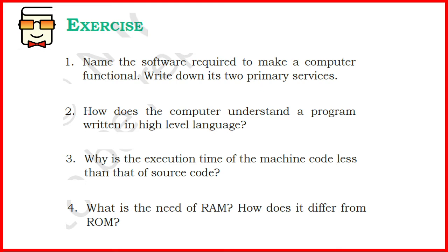Coming to the second question: how does the computer understand a program written in high level language? A computer cannot understand a program written in high level language directly. So the high level language program, or the source code, must be converted to machine code or machine level language, also known as the object code. This conversion is done either through compilers or interpreters that convert high level language into machine level language.